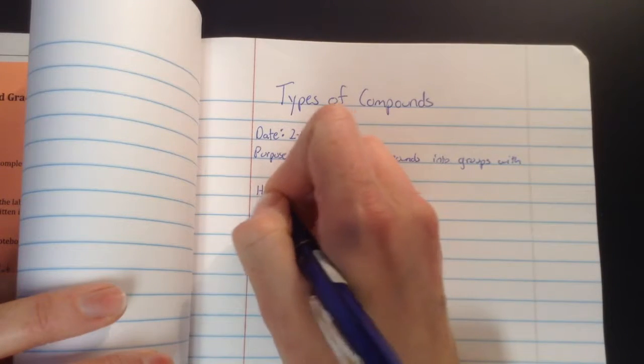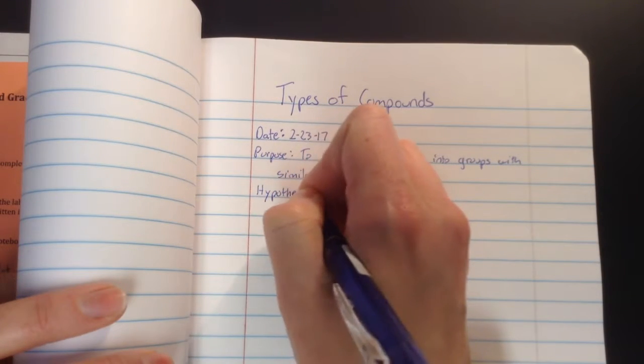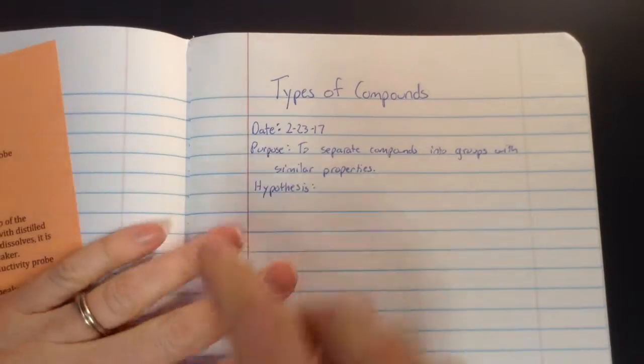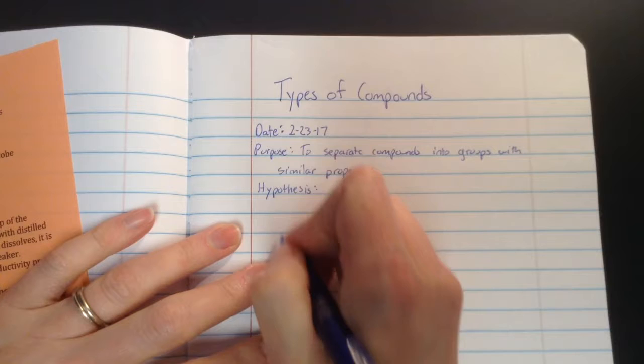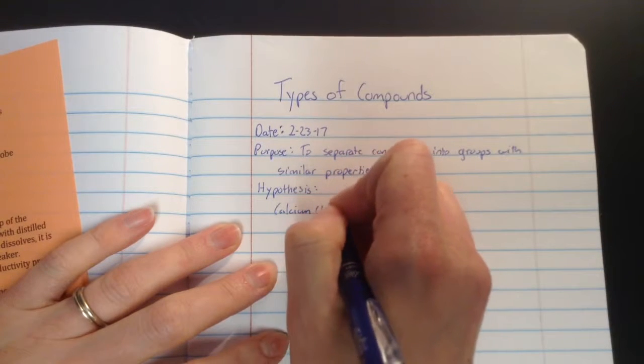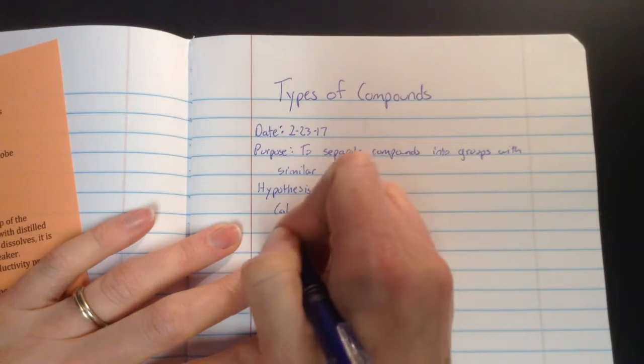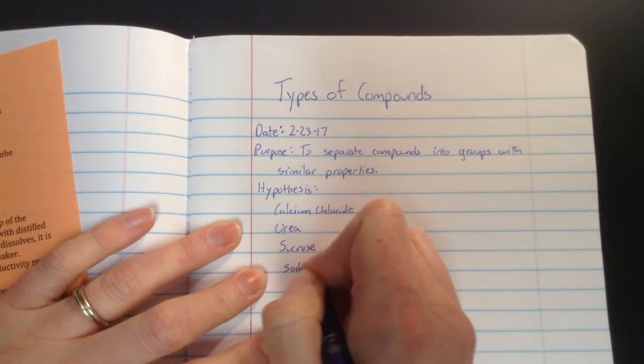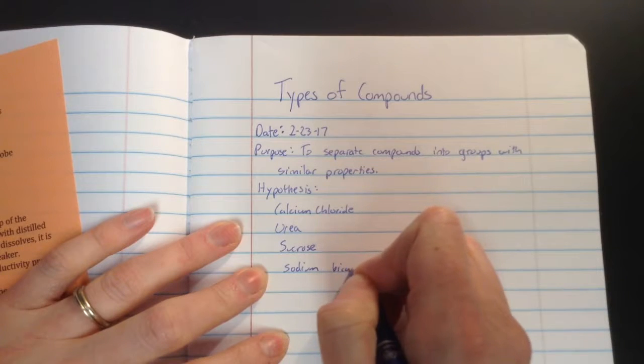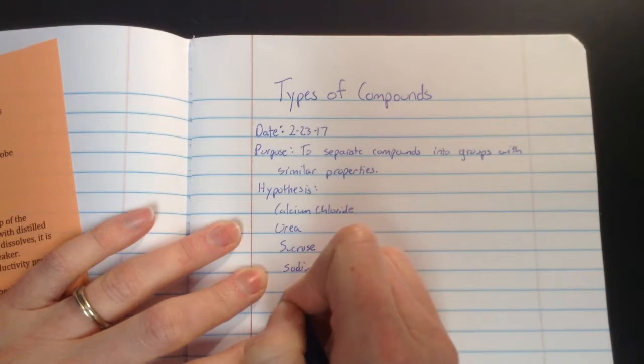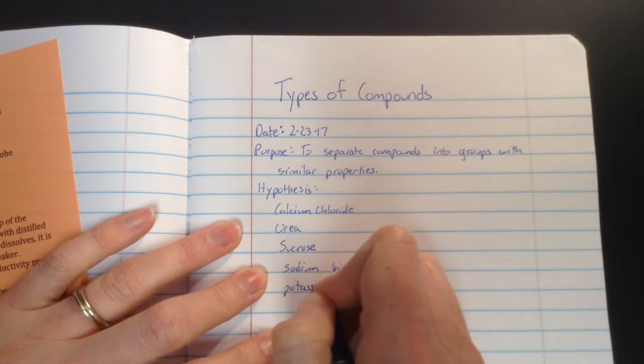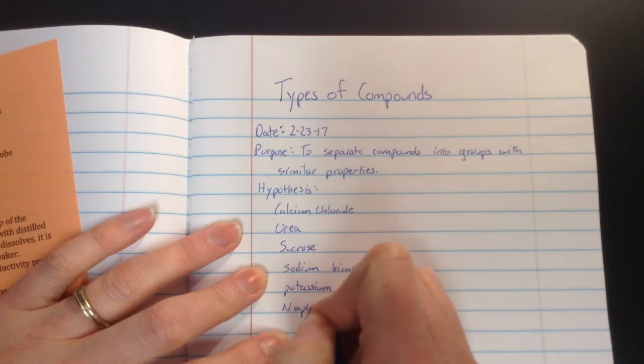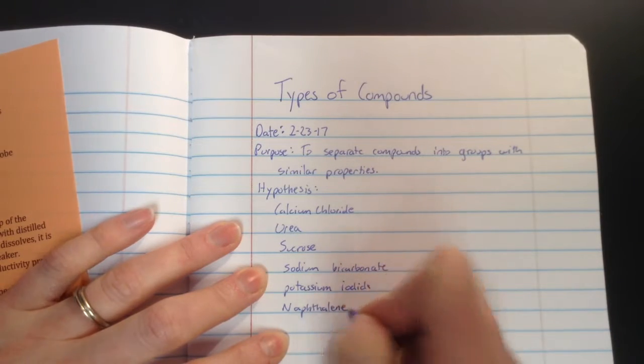And for your hypothesis, this one's going to require you to make some guesses here, some legit guesses here. We've got calcium chloride, we've got urea, sucrose, sodium bicarbonate, which is baking soda, potassium iodide, and naphthalene, which is mothballs.